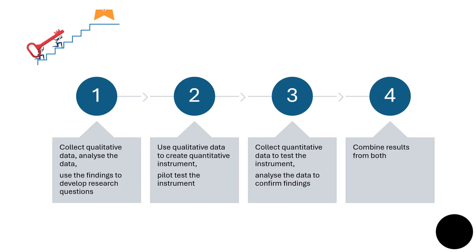The first step is to collect qualitative data through methods like interviews, focus groups or open-ended surveys. Then you analyze the data to identify themes, patterns or constructs, and use these findings to develop hypotheses or refine research questions. The second step is using the qualitative findings to create a quantitative instrument such as a survey or experiment, and then define the variables for further testing.